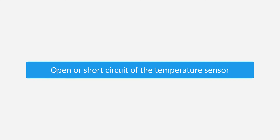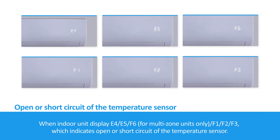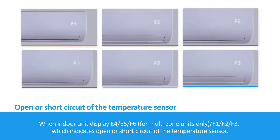Open or short circuits of the temperature sensor. When the indoor unit displays E4, E5, F6 (for multi-zone units only), F1, F2, or F3, this indicates open or short circuits of the temperature sensor.